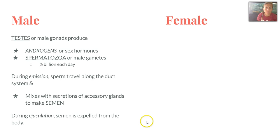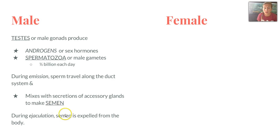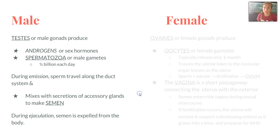The male gonads are the testes. They produce androgens, or sex hormones, and spermatozoa, which are sperm or male gametes, about half a billion each day. During emission, sperm travel along the duct system and mix with secretions of the accessory glands to make semen. Semen will only be expelled from the male body through ejaculation.